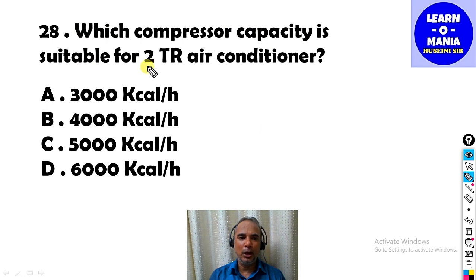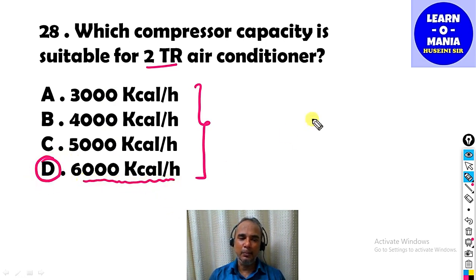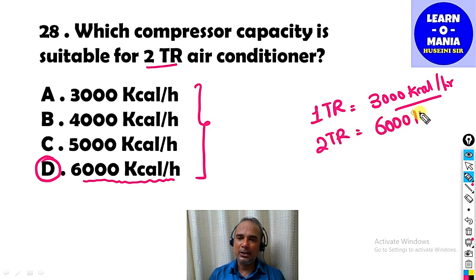Next MCQ: Which compressor capacity is suitable for a two-TR air conditioner? The answer is option D — 6000 kcal per hour. One TR compressor has a capacity of 3000 kcal per hour, so 2 TR gives 6000 kcal per hour.